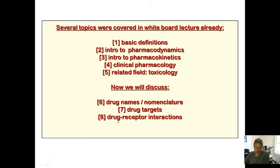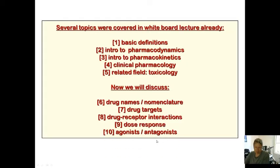We did a couple of these things already. Drug names and nomenclature we did last time. Drug targets we also did last time. One of the things I did for this lecture is I expanded the topic of drug-receptor interactions, so there's more I want to talk about. You got a basic picture last time, but there's a little bit more I want to do. We're going to talk more about drug-receptor interactions. Dose response we pretty much talked about, and then we're going to talk about agonists and antagonists.